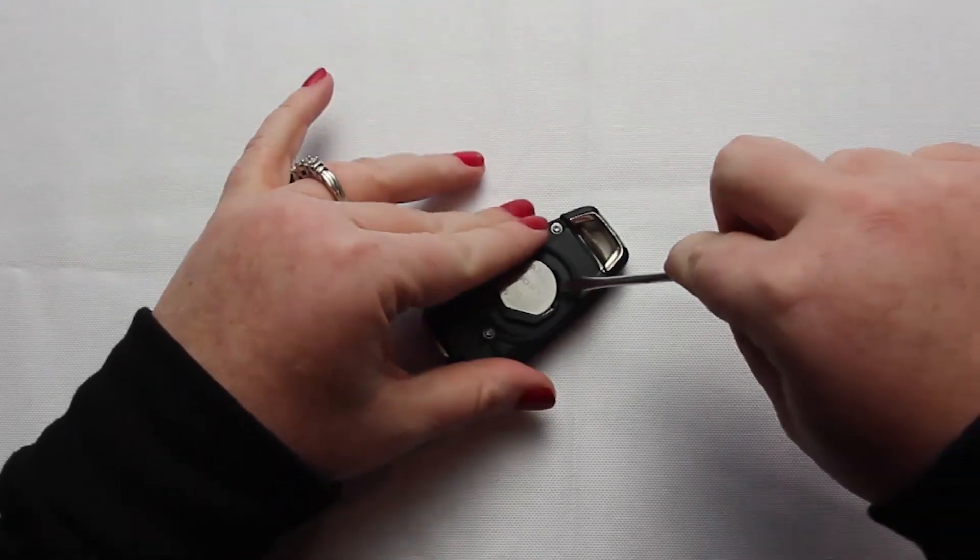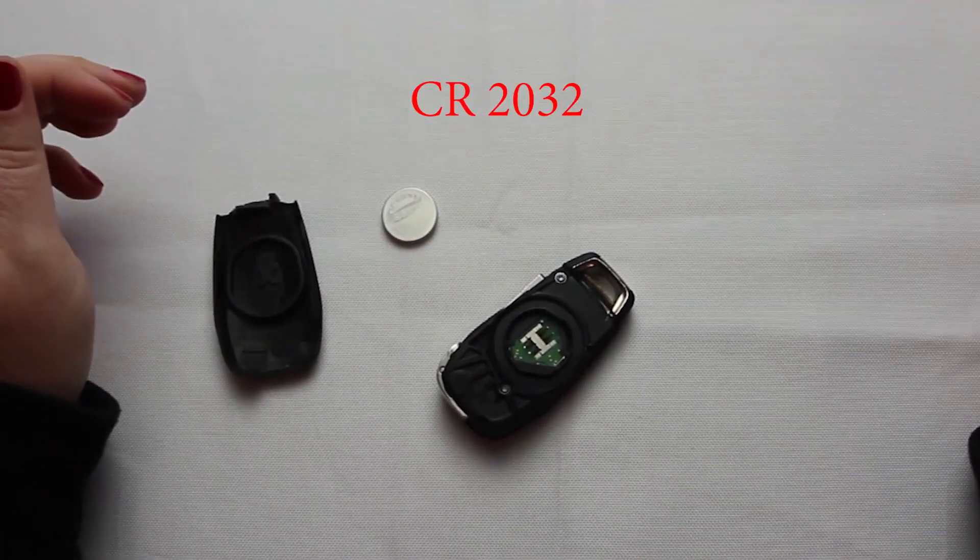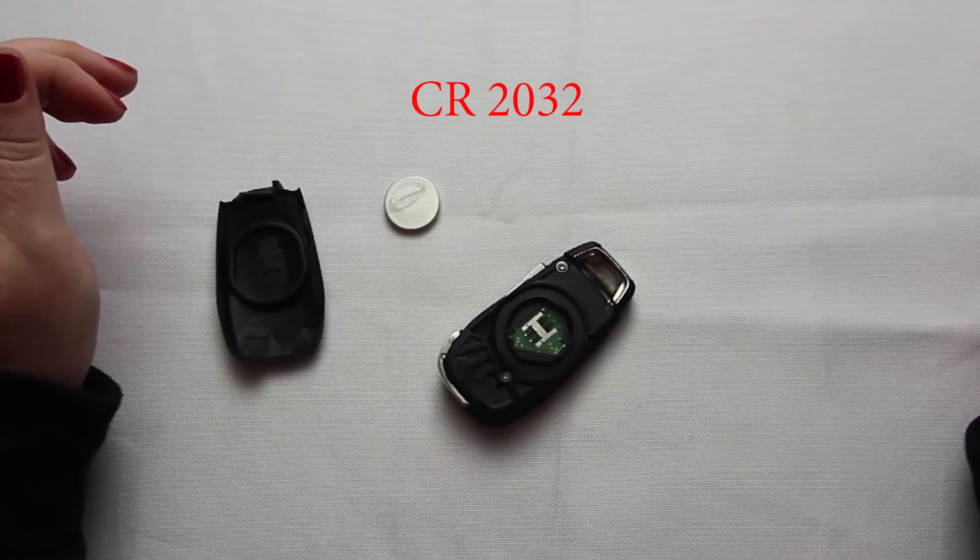To get the battery out you'll just want to use the screwdriver again to help pop it out. The battery used for this key fob is a CR2032.